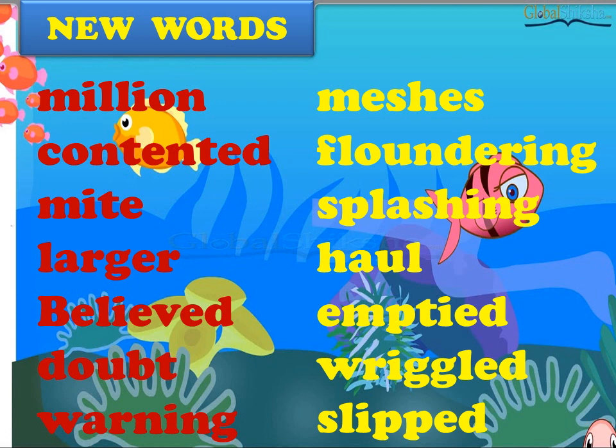Now come to the second column. Meshes — M-E-S-H-E-S. Meshes. Floundering — F-L-O-U-N-D-E-R-I-N-G. Floundering. Splashing — S-P-L-A-S-H-I-N-G. Splashing. Haul — H-A-U-L. Haul. Emptied — E-M-P-T-I-E-D. Emptied. Wriggled — W-R-I-G-G-L-E-D. Wriggled. Slipped — S-L-I-P-P-E-D. Slipped. So these are the new words.